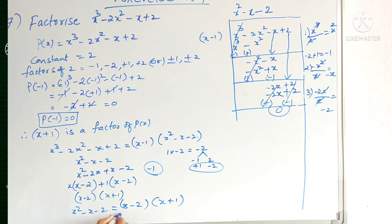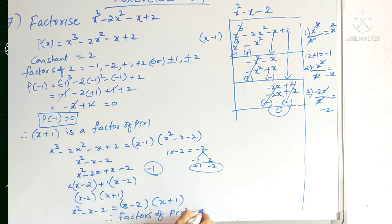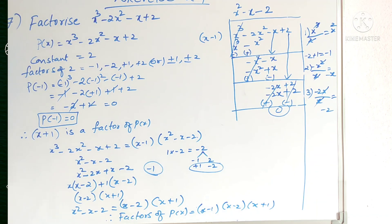So the factors of the given polynomial p(x) are (x plus 1), (x minus 2), and (x plus 1). In this way we can factorize. I think you understand this problem, students. Please follow my channel regularly, subscribe to my channel, like this video and share with your friends. Thank you for watching.